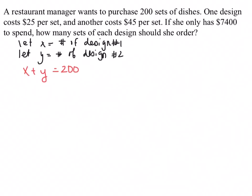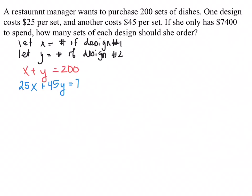The next part is money. For every design 1 she buys it costs $25, so it's $25 times x plus $45 times y, and she wants that to equal $7,400. So now we have our system of equations. Go ahead and pause the video and solve for how many of each design.